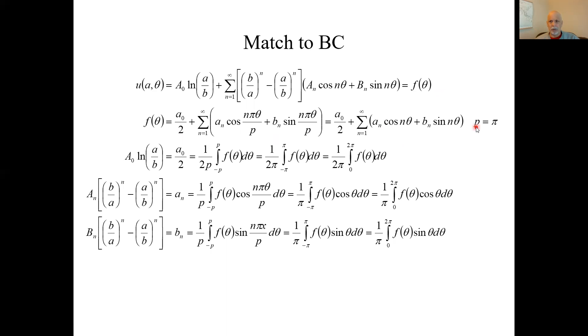When you match it to a Fourier series, the P needs to equal π because we want it to match this format. Here's the general format for the Fourier series. So to get it to match this, we need P to equal π. That's how we put P to expand by. And the rest of it then is matching coefficients.